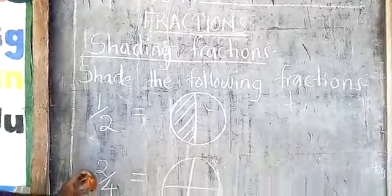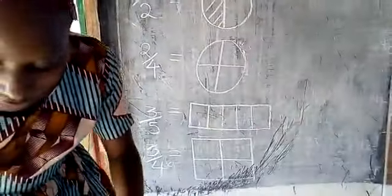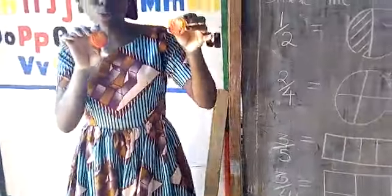So here we are having two quarters, which is the same as two out of four. Now we are having these are two halves.